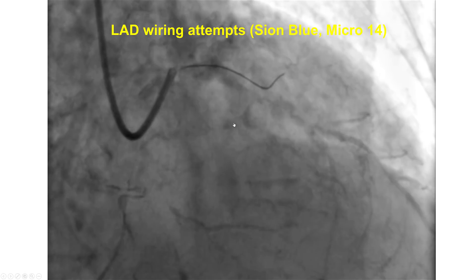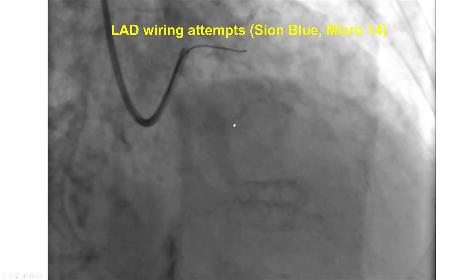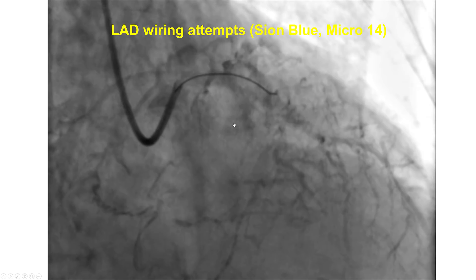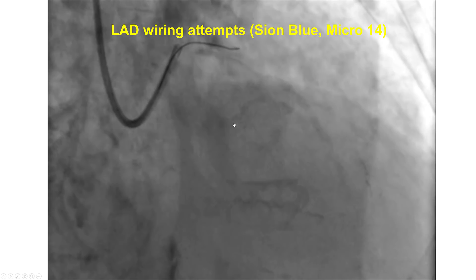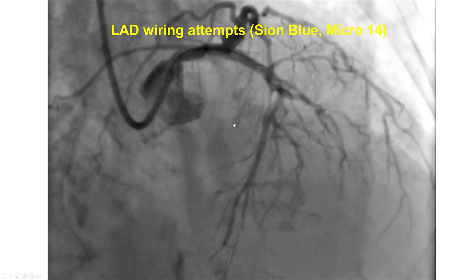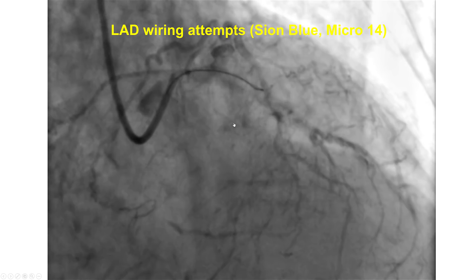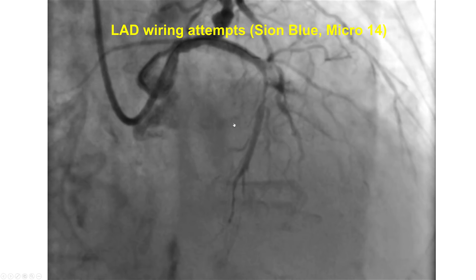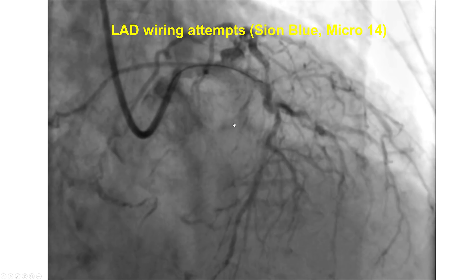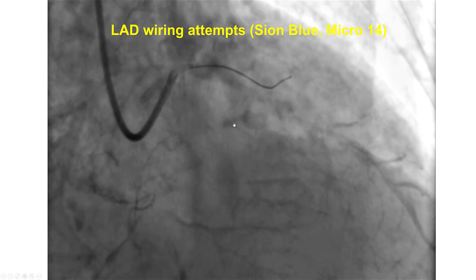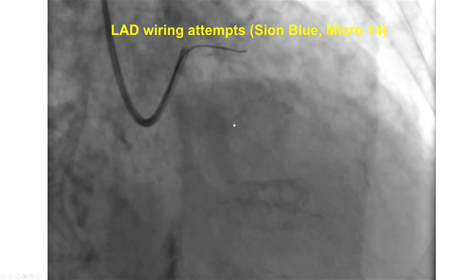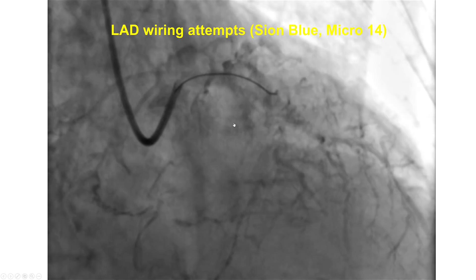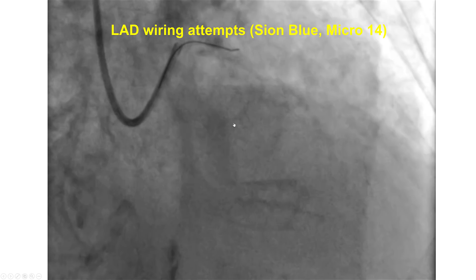This is obviously a complex lesion because of the severity and its proximity to a major bifurcation. That is why we used a 7 French slender sheath on the radial and also used a microcatheter upfront together with a workhorse guidewire.